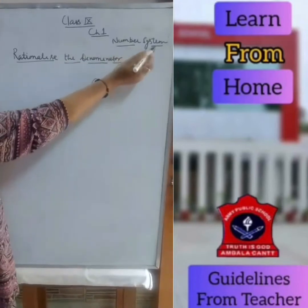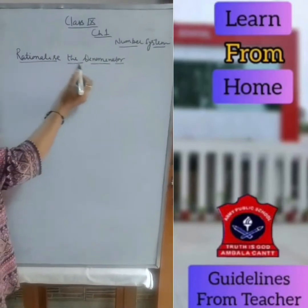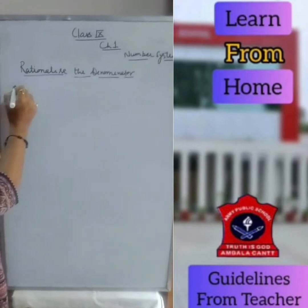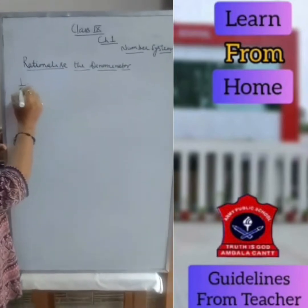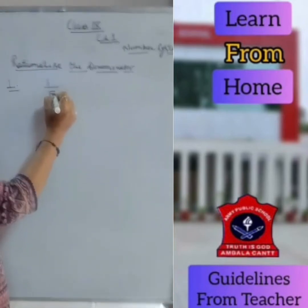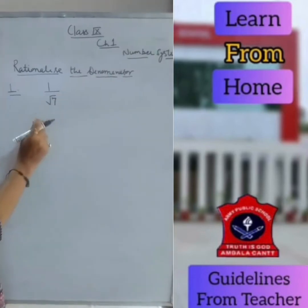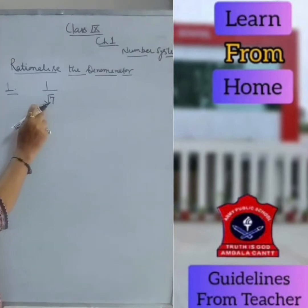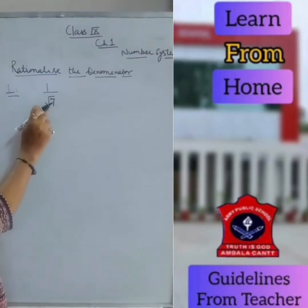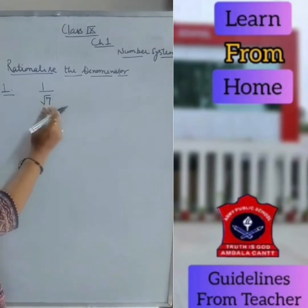Friends, in chapter 1, Number System, today we are going to learn how to rationalize the denominator. Rationalizing the denominator means in the denominator you must have a simple term, not a term containing the root.